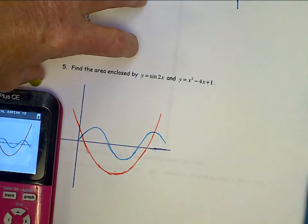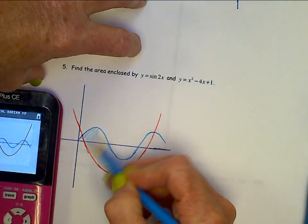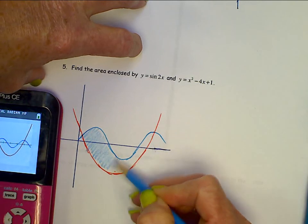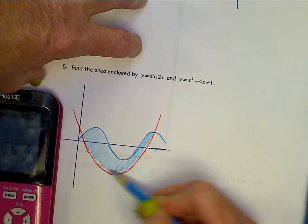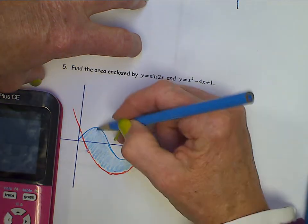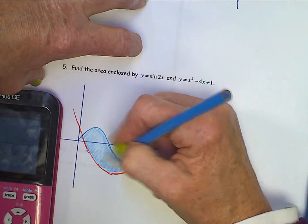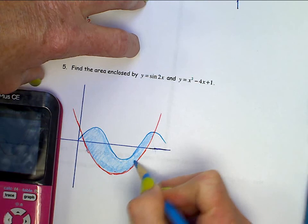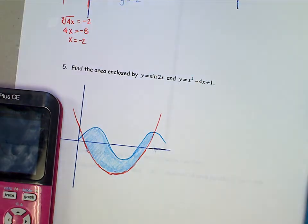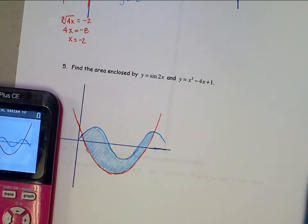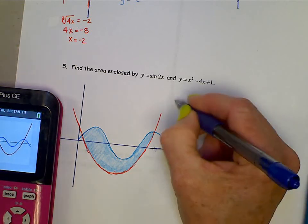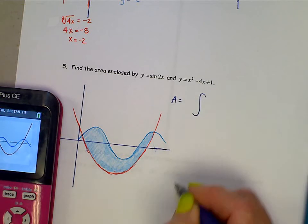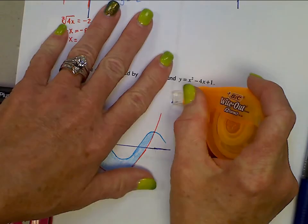The region contained between those two is this. Now, the last couple of problems, it's been very easy to tell where the graphs intersect. This one, they're not as nice. You're going to have to figure out those points of intersection. So let's just start this, set this up. This area is going to be, maybe I should write area so we don't get that confused with something else.